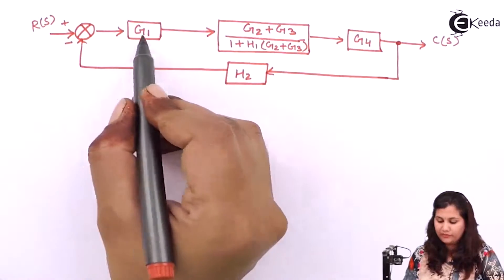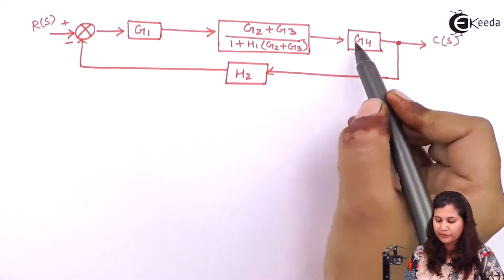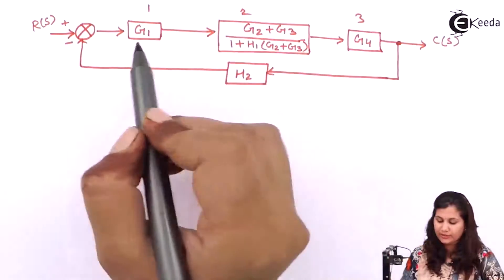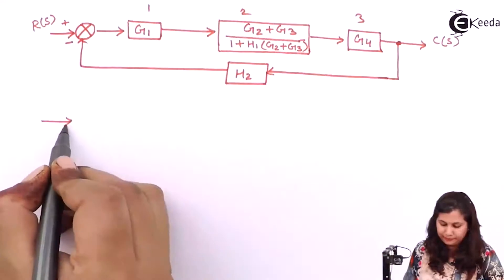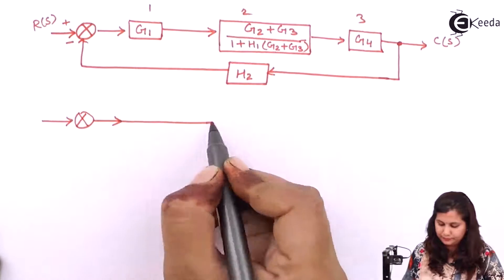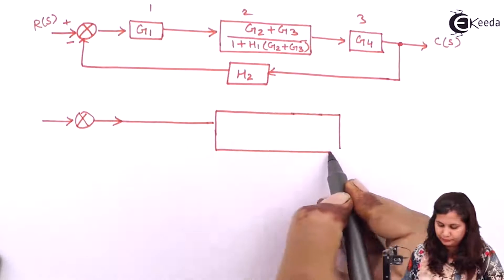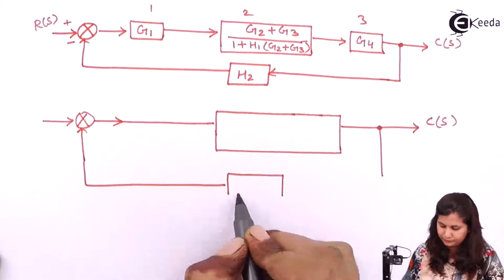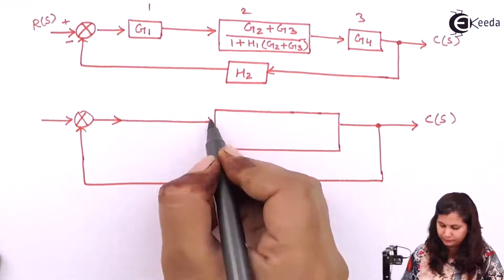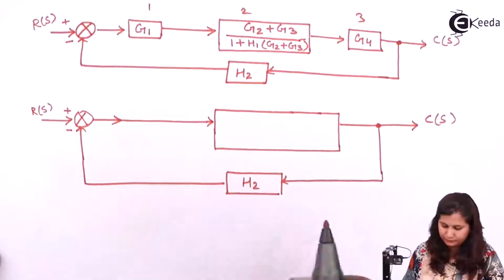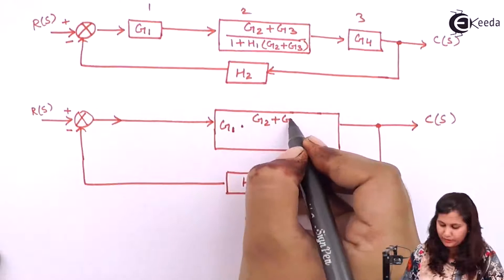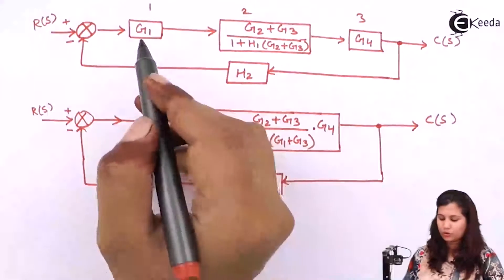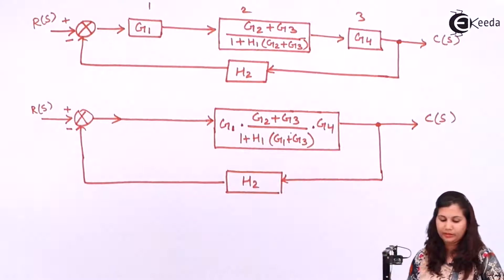Now these three blocks — G1, G2 plus G3 upon 1 plus H1(G2 plus G3), and G4 — are in series. So their transfer functions will be multiplied. So G1 multiplied with (G2 plus G3) all three transfer functions are multiplied with each other.